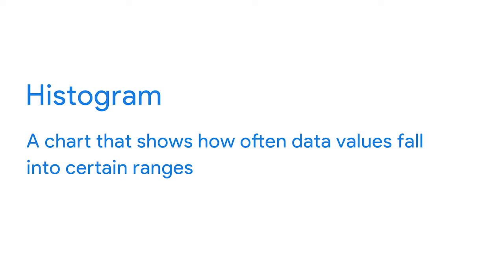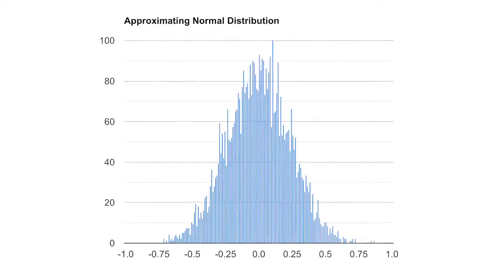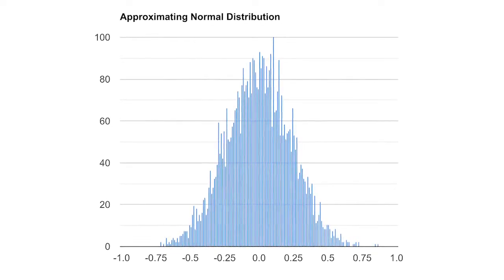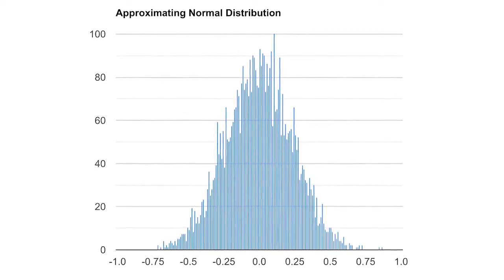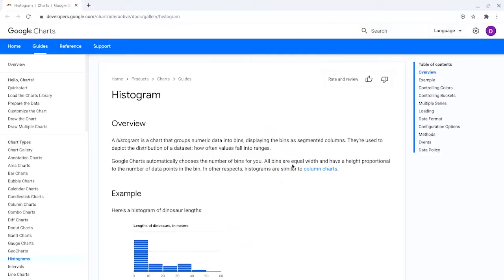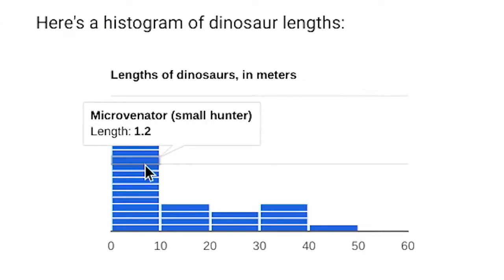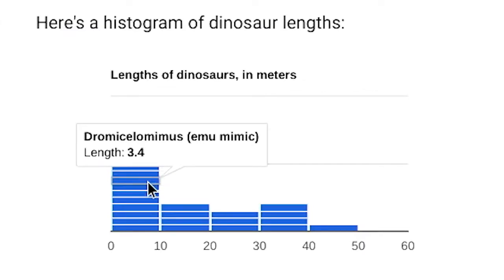Another situation is when you need to show how your data is distributed. A histogram resembles a bar graph, but it's a chart that shows how often data values fall into certain ranges. This histogram shows a lot of data and how it's distributed on a narrow range from negative one to positive one. Each bin or bucket contains a certain number of values that fall into one small part of the range. If you don't need to show that much data, other histograms would be more effective — like this one about the length of dinosaurs, where the bins or buckets are segmented so you can show each value that falls into each part of the range.